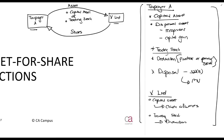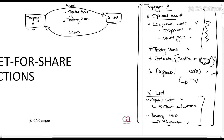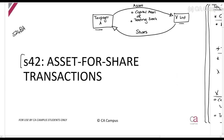Section 42 is going to change things. There will still be a disposal, whether trading stock or otherwise, but it is written in such a way that there will be no recoupment, no capital gain, and no taxable profit from the disposal of trading stock. The idea is that SARS doesn't want to tax you and have you pay value out of your business by paying taxes if the asset hasn't actually been disposed of to someone outside the group.